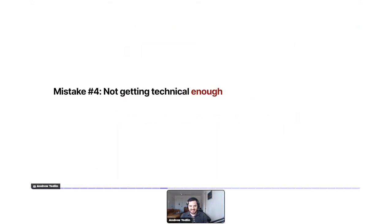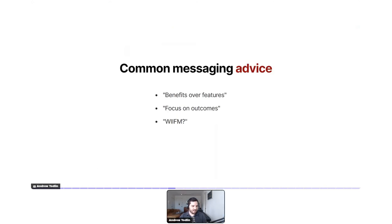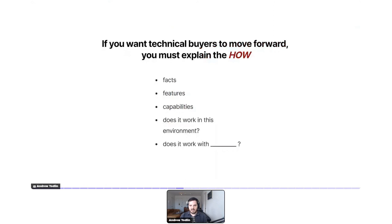So, I just told you mistake number three was getting too technical — mistake number four is of course not getting technical enough. You've probably heard advice like 'focus on benefits over features,' 'focus on outcomes,' and 'always answer what's in it for me.' These things are still true. The difference is that when you have technical buyers, you absolutely have to explain how the product helps them get those benefits and outcomes.